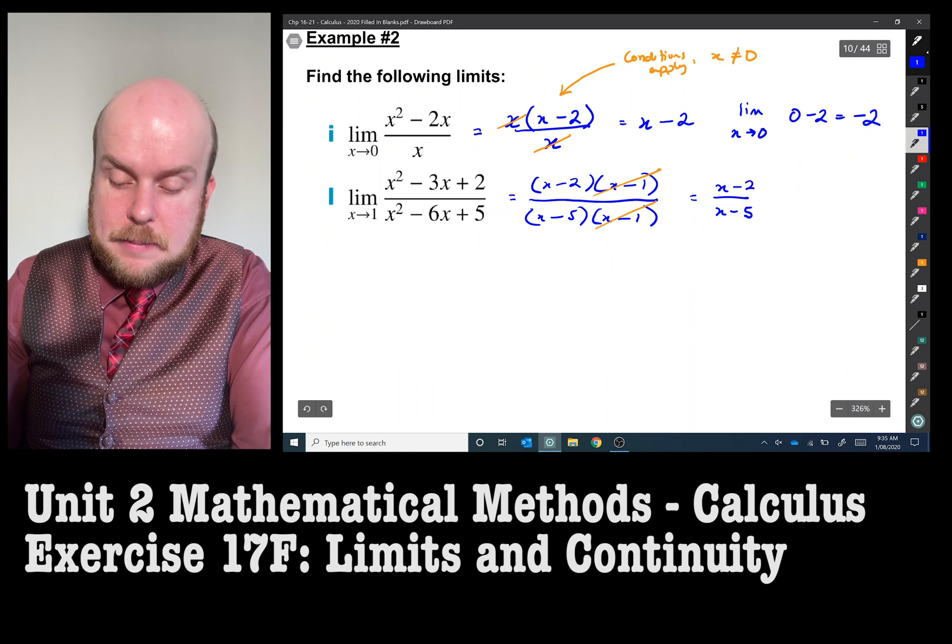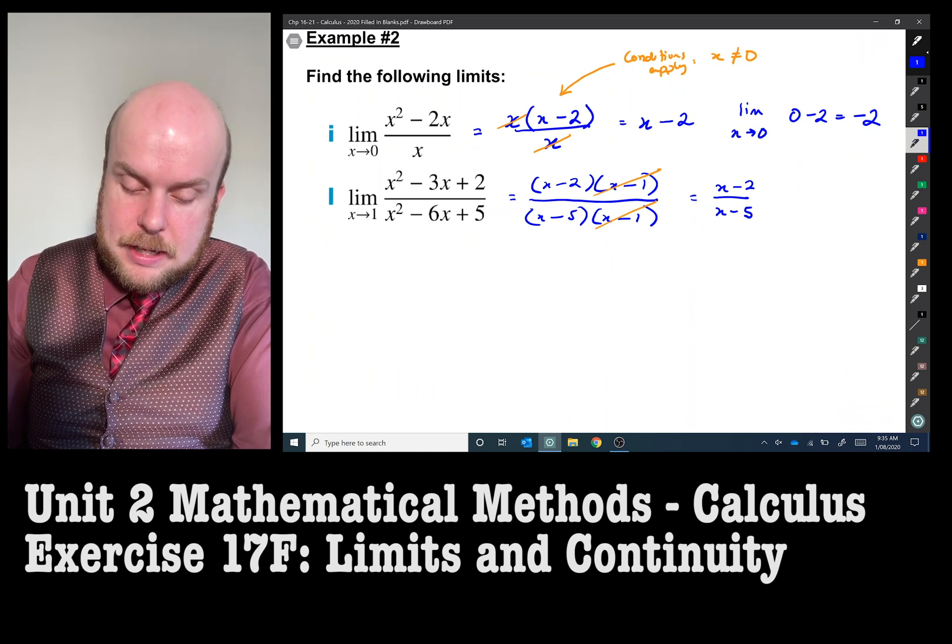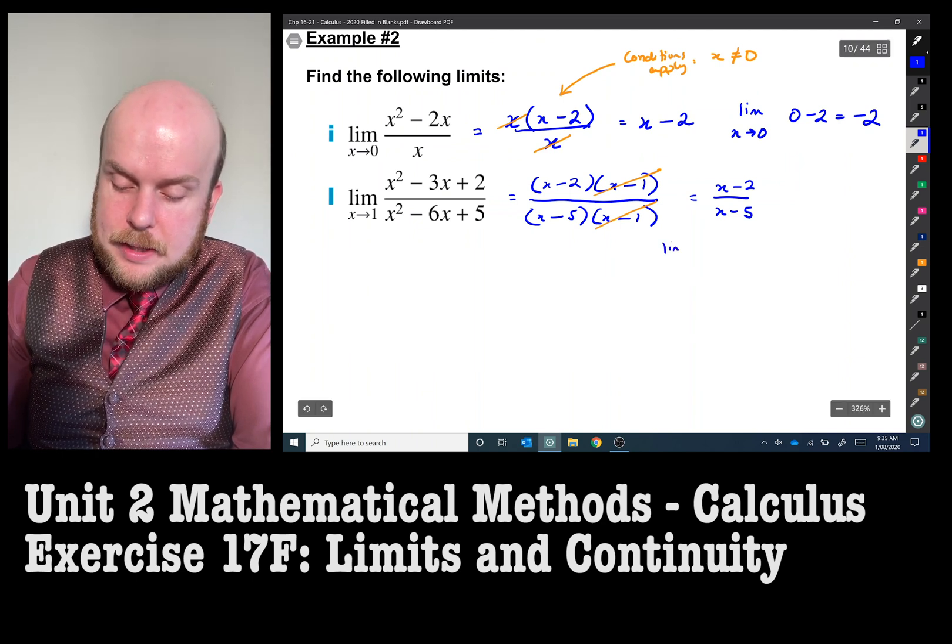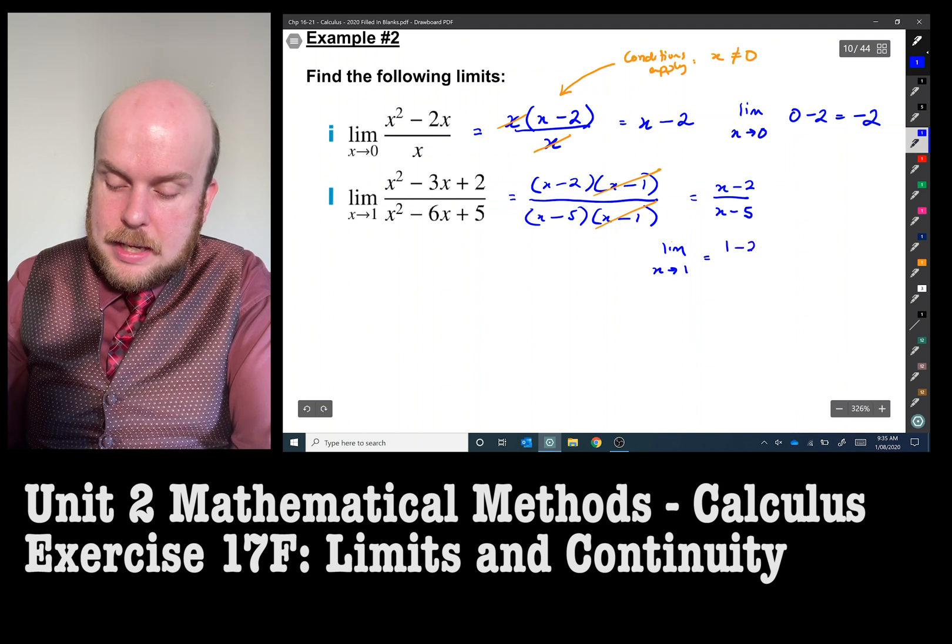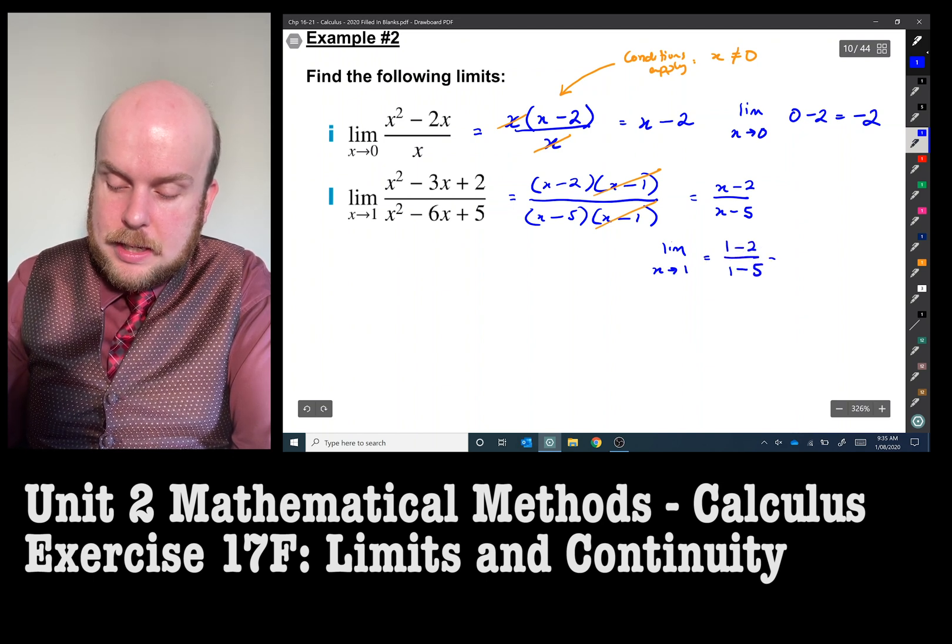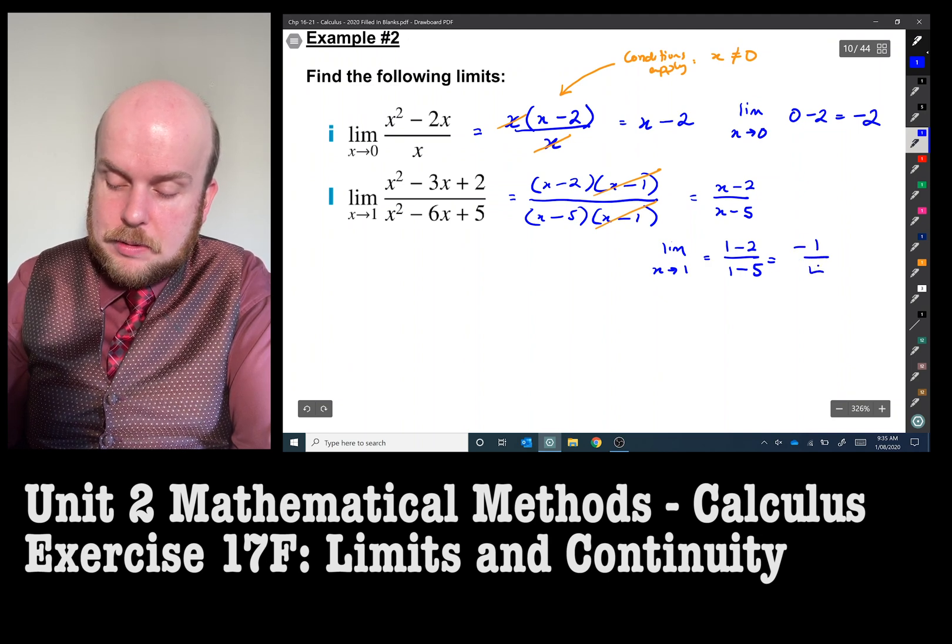And again given that x does not equal to 1. So then at this step we can now do the limit as x approaches 1: 1 minus 2, 1 minus 5, negative 1, negative 4, which is equal to 1 quarter.